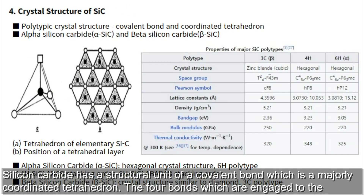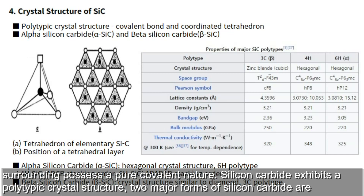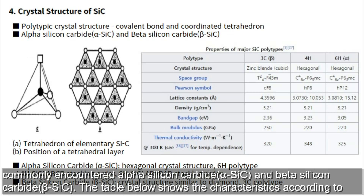Silicon Carbide has a structural unit of a covalent bond which is a majorly coordinated tetrahedron. The four bonds engaged to the surrounding possess a pure covalent nature. Silicon Carbide exhibits a polytypic crystal structure, and two major forms are commonly encountered: Alpha Silicon Carbide and Beta Silicon Carbide.